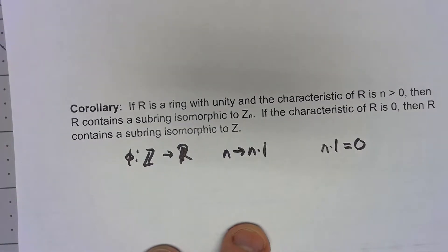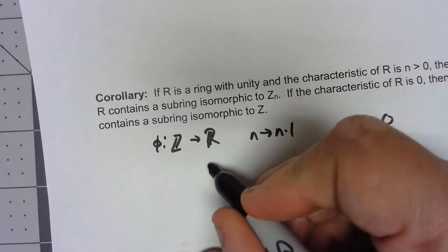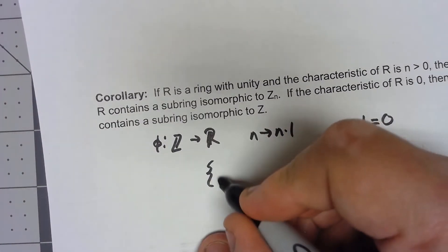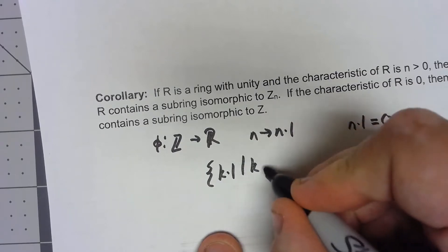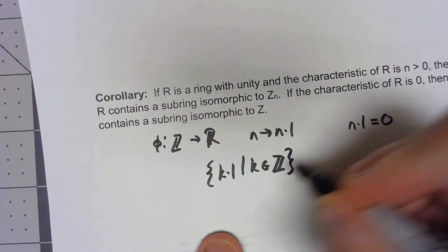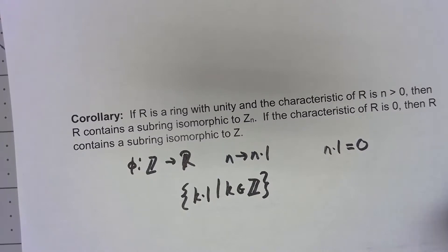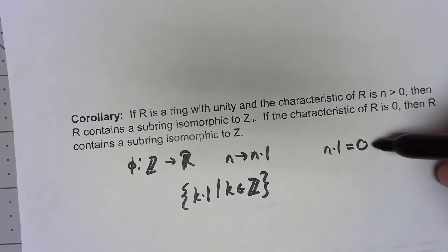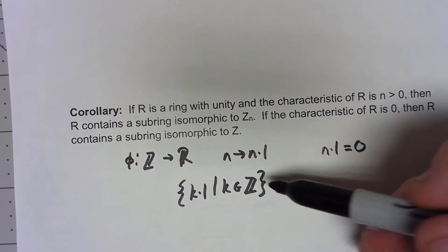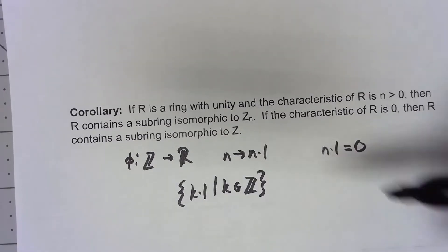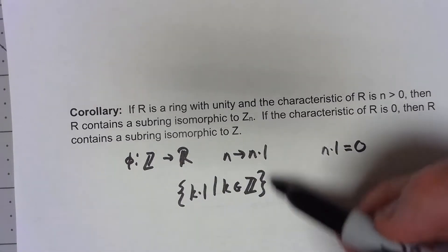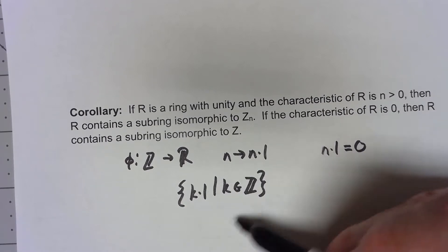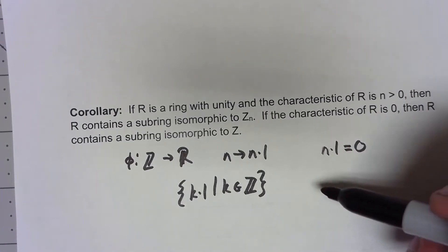So if I just look at the set of all multiples of 1, I just take the set of all k times 1 such that k is an element of Z, that's going to be, first of all, there have to be n elements because of this whole characteristic thing. And this thing is going to be cyclic. Well, it's going to be isomorphic to Zn is really what it boils down to. Addition wise it's going to be cyclic and then multiplication wise it's going to work as well.